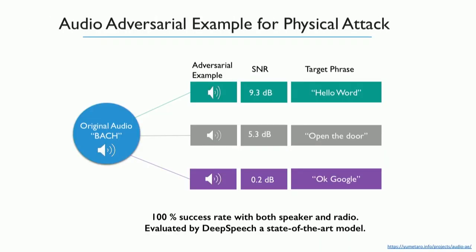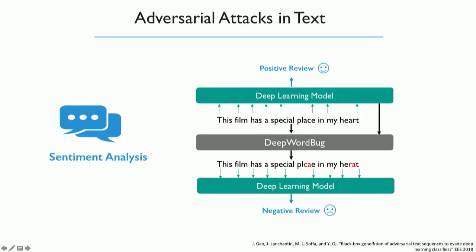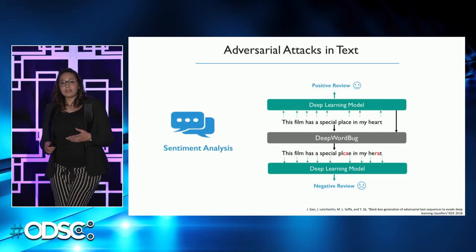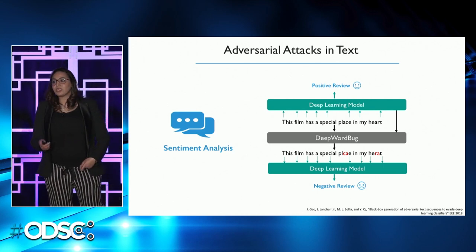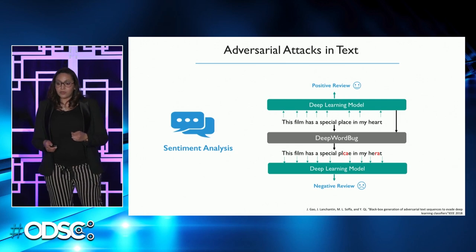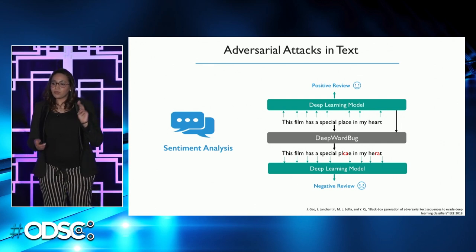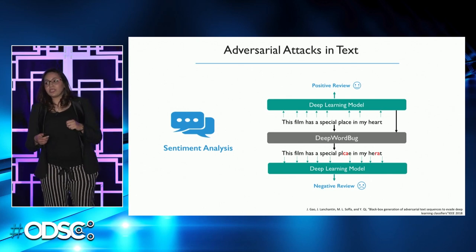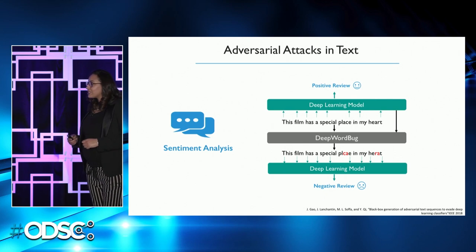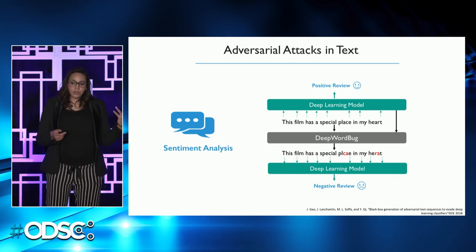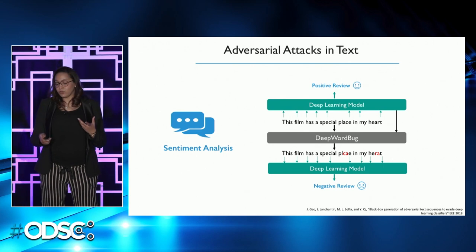How about natural language understanding? Think about recommendation systems that use sentiment analysis to rank comments and reviews about products or movies. It is possible to change only a few characters — turning only one character — to flip the prediction from a positive review to a negative review. If this is done on a massive number of reviews and comments, we can affect the business value of the product or movie being evaluated.